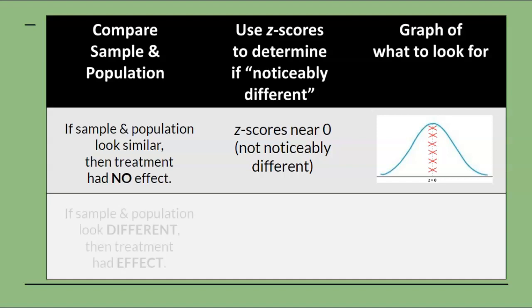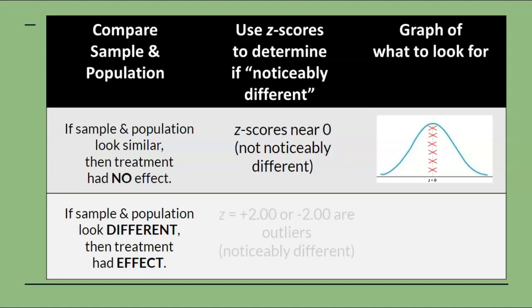Now, on the other hand, if the sample and population look different, then the treatment probably had an effect. We would expect to see z-scores of plus 2 or minus 2, which are considered extreme outliers and are noticeably different.